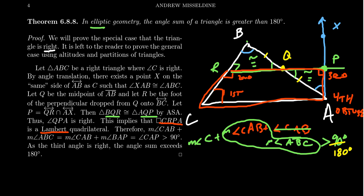Adding the measure of angle C, which is itself a right angle, shows that the angle sum of the right triangle exceeds 180 degrees. It is left as an exercise for the reader to show that all elliptic triangles have an angle sum greater than 180 degrees — the idea is to dissect a general triangle using an altitude, very similar to what we did in hyperbolic geometry.